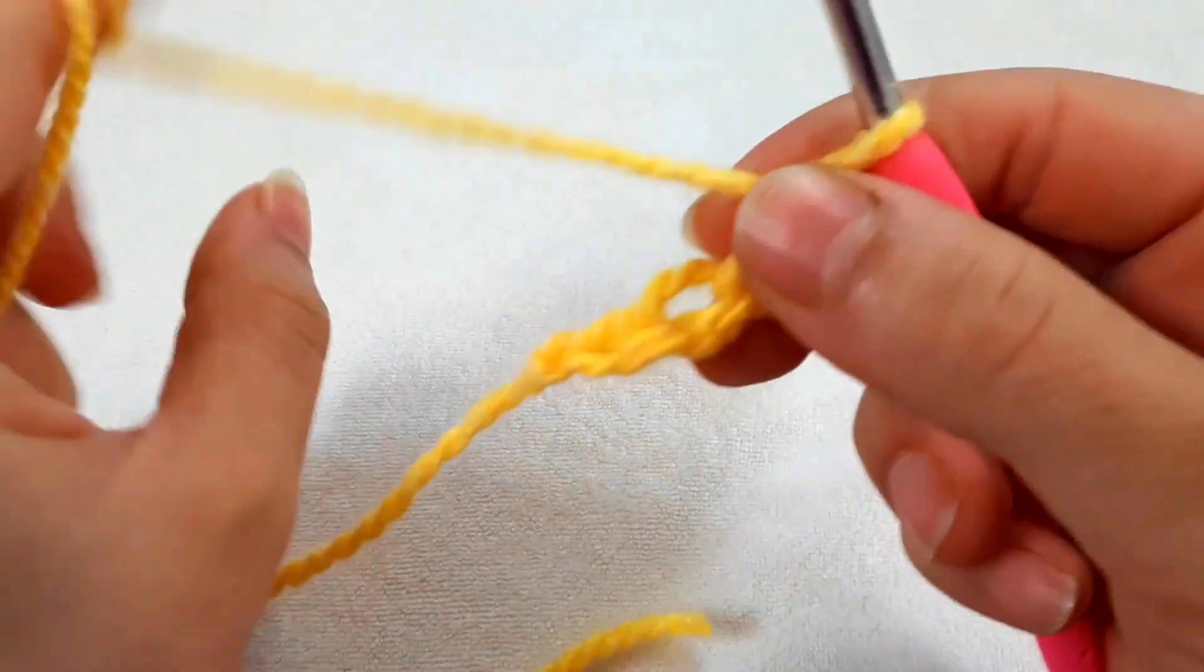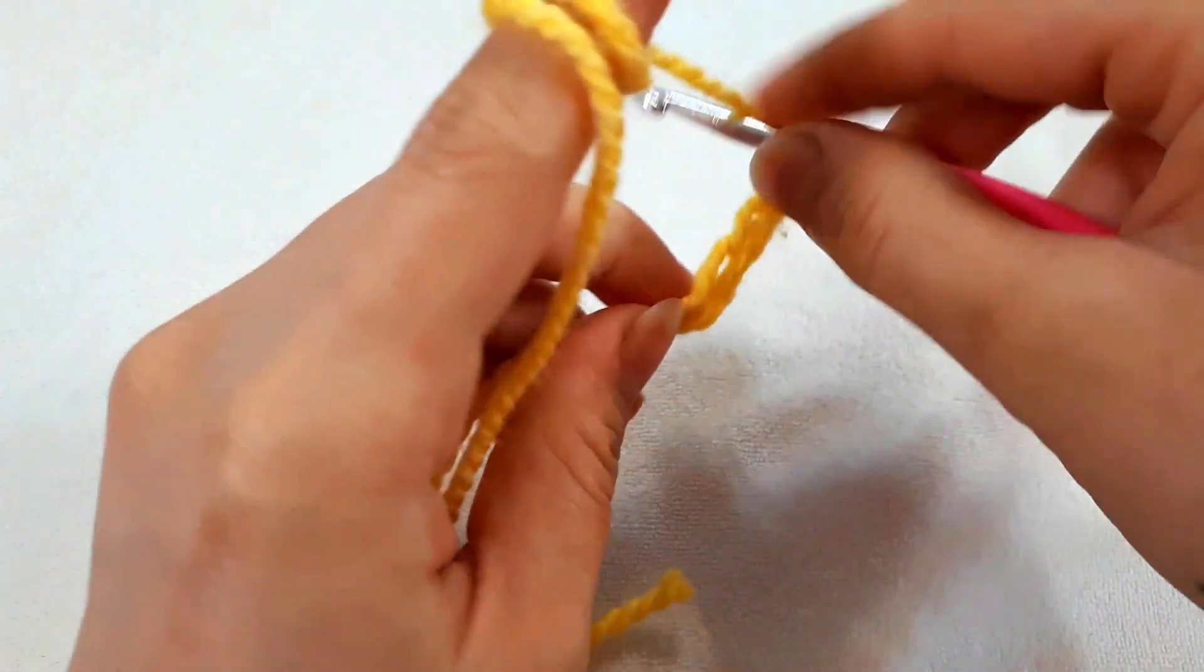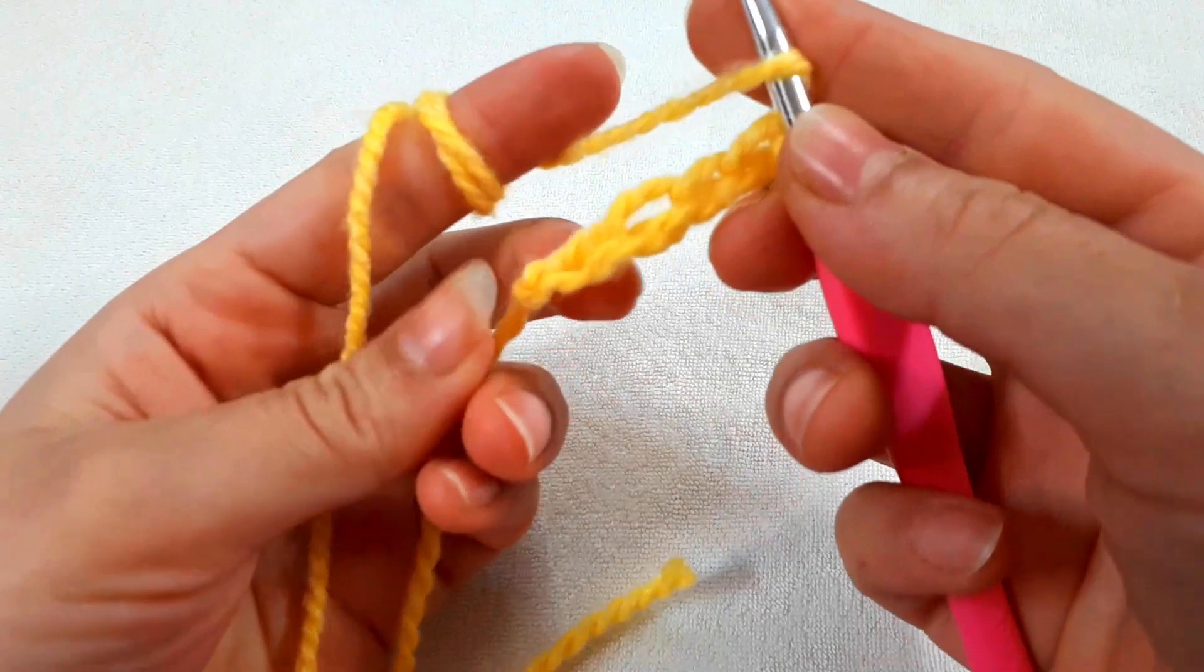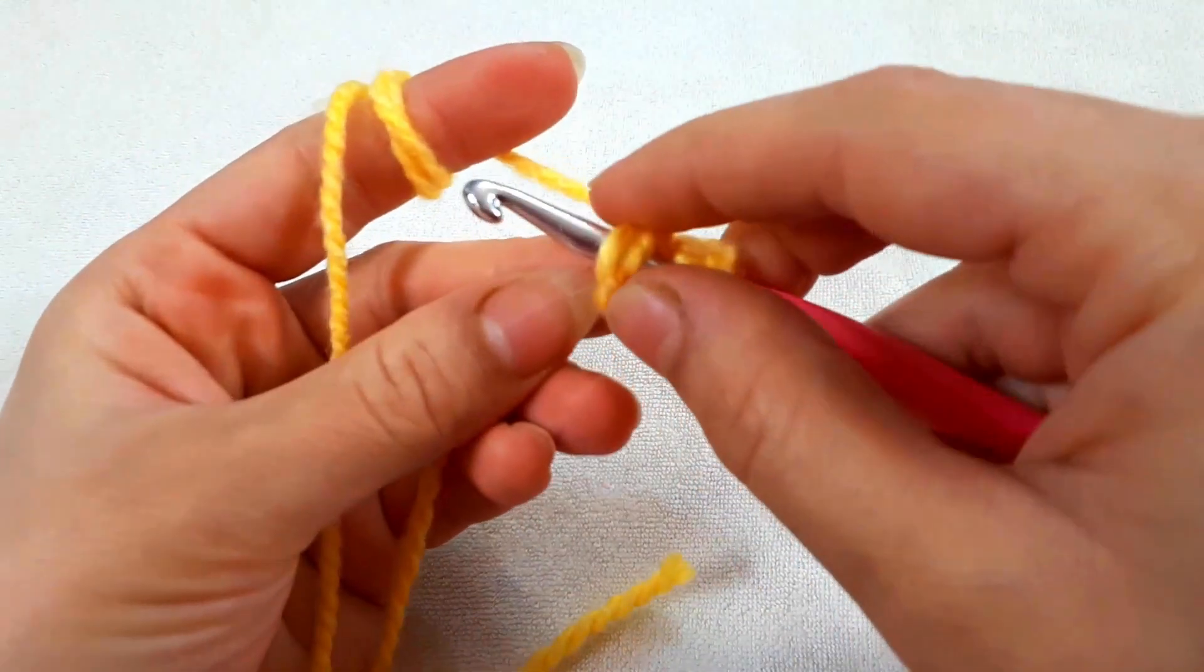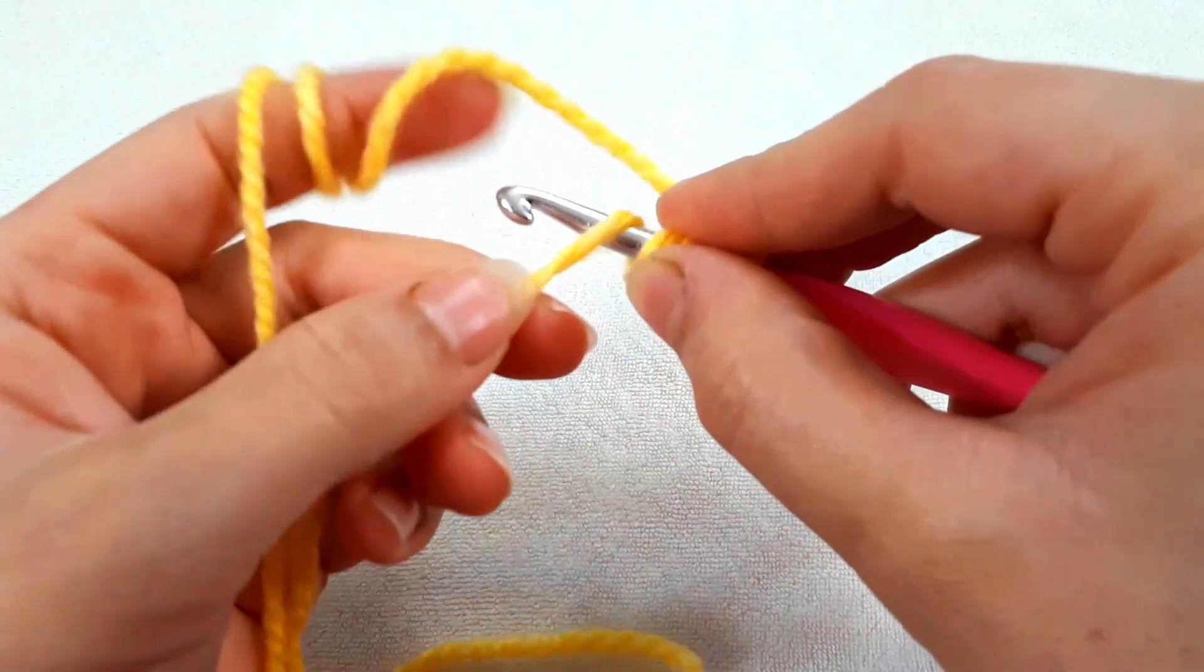It depends on your pattern. Yarn over, insert your hook into the first chain, and then wrap the tail end.